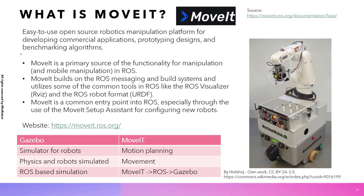Here is the definition you can read, but I'll try to explain in simple terms. MoveIt is an open-source platform that works with ROS and is used as a manipulation platform. Let's try to understand what a manipulation platform actually is.